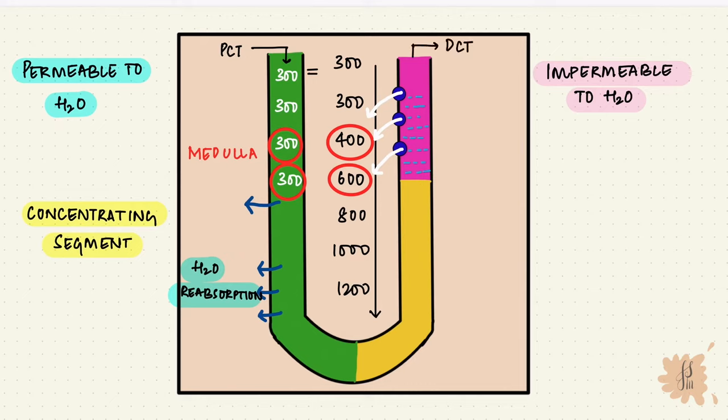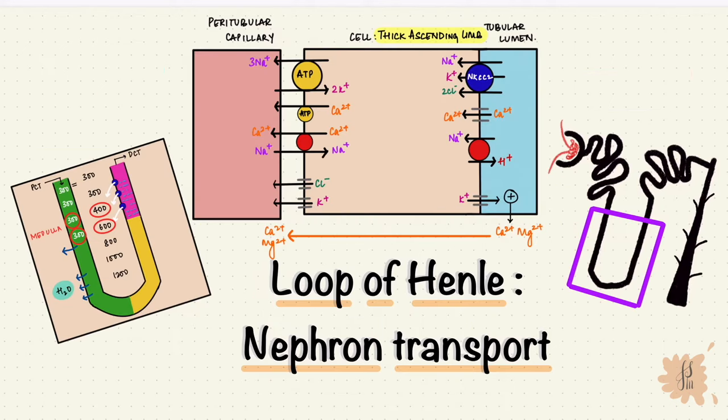The most important function of the loop of Henle is the countercurrent multiplier system. Its main function is to concentrate urine. Make sure to check out my video on the countercurrent multiplier.